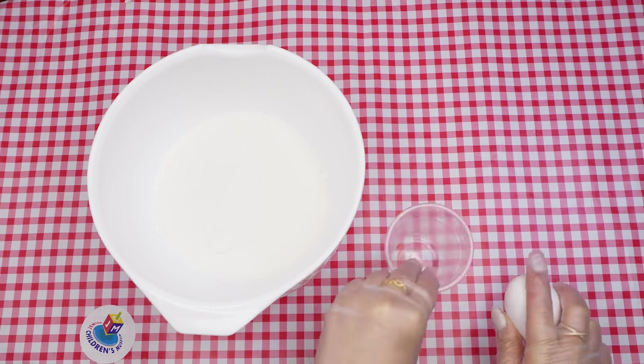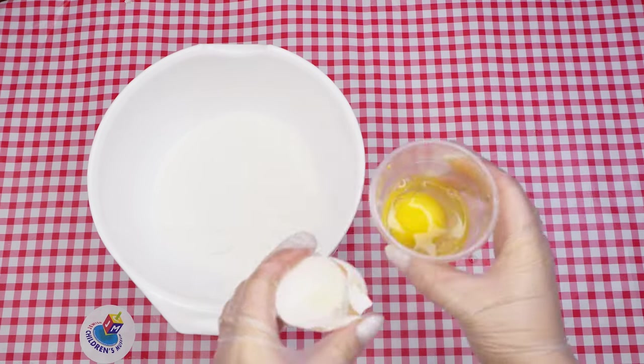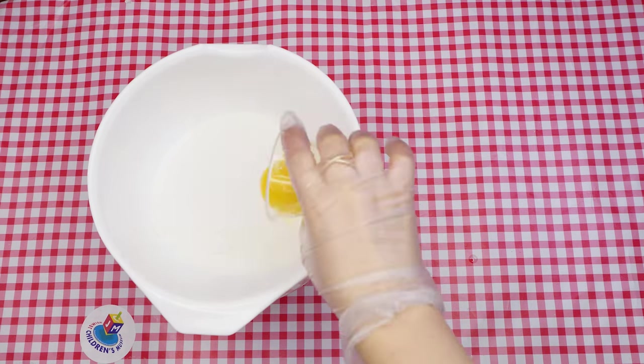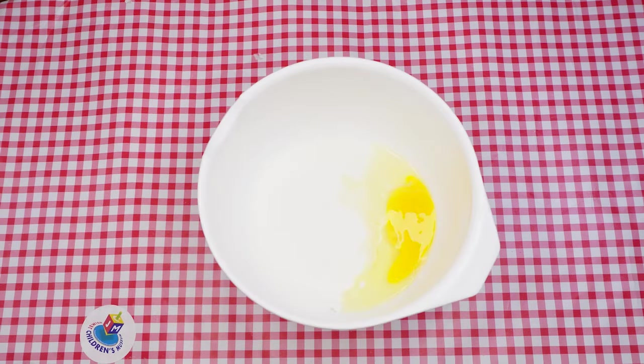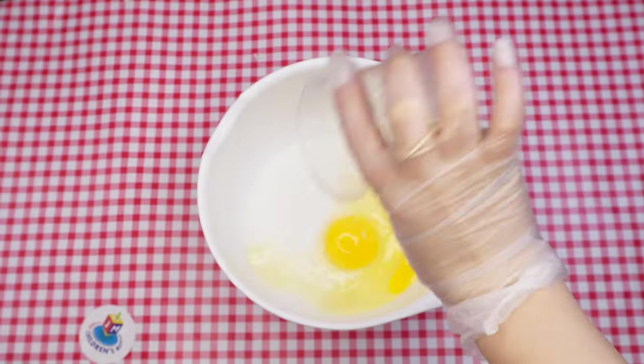Next, crack the eggs one at a time, first checking to make sure there are no blood spots. We want to be sure these cookies stay kosher. And splash, there goes the second egg.